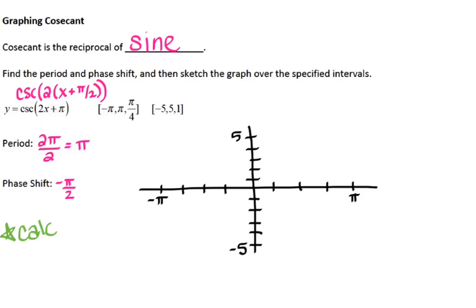On my calculator I'm going to go into y equals and type in 1 over sine of — you can use the original or the factored form. I'll do the original, but we did have to factor it to get the correct phase shift. So I'm typing 1 over sine of (2x plus π). I need to adjust my window: x min is negative π, x max is positive π, x scale is π/4, y min is negative 5, y max is positive 5, y scale is 1, then hit graph.